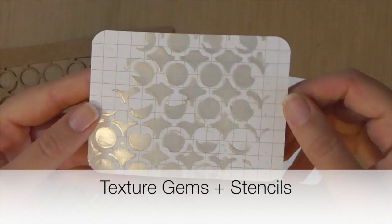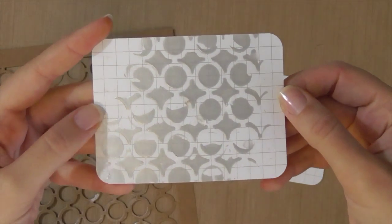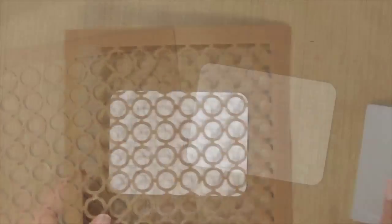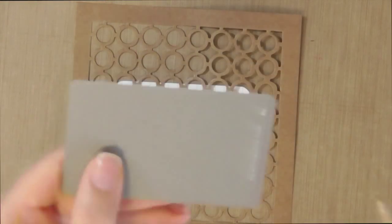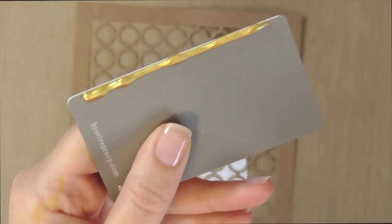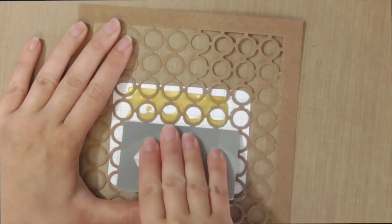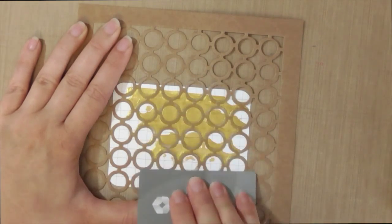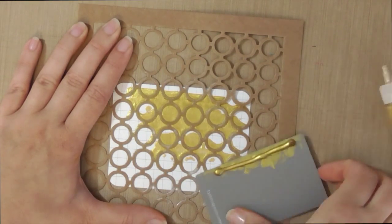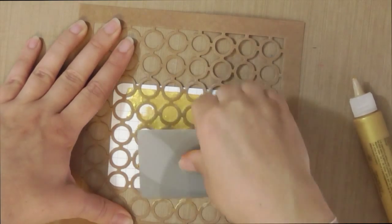One of my favorite techniques is using texture gems with stencils. Just take your paper and place your stencil over it. I like to use a credit card or hotel room key and apply a bead of the texture gem right along the edge, then squeegee it down over the stencil.